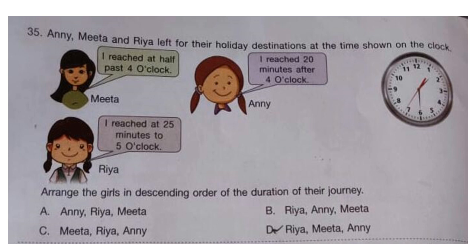Question 35: Ani, Meeta and Ria left for their holiday destination at the time shown on the clock. Arrange the girls in descending order of the duration of their journey.